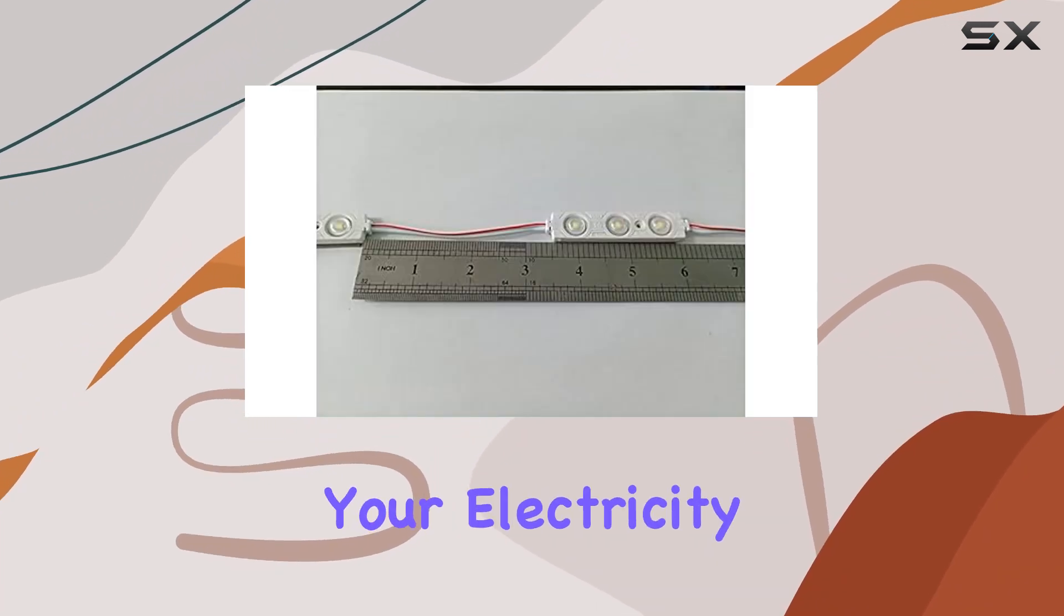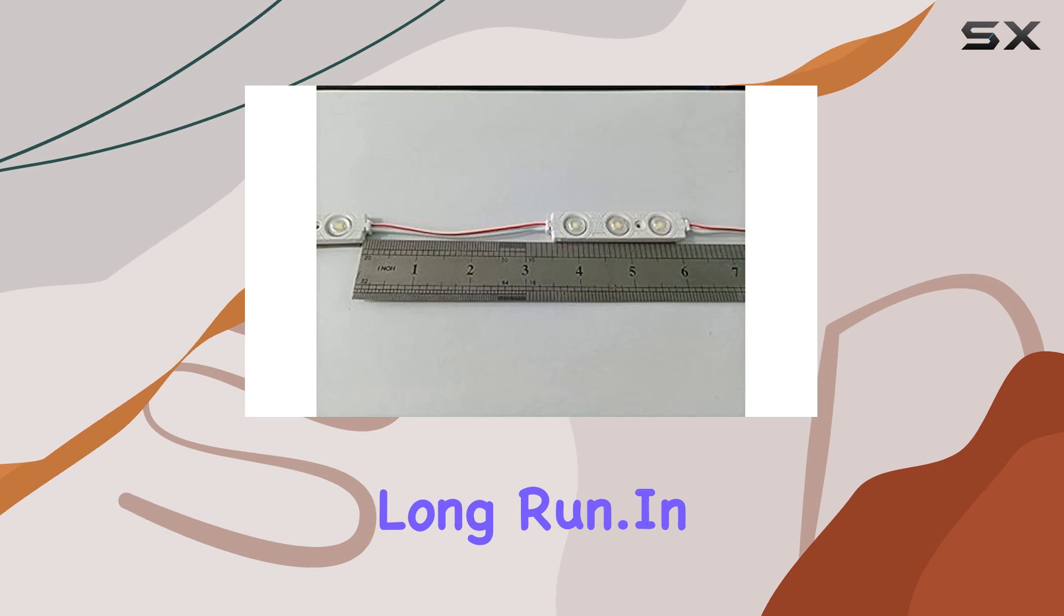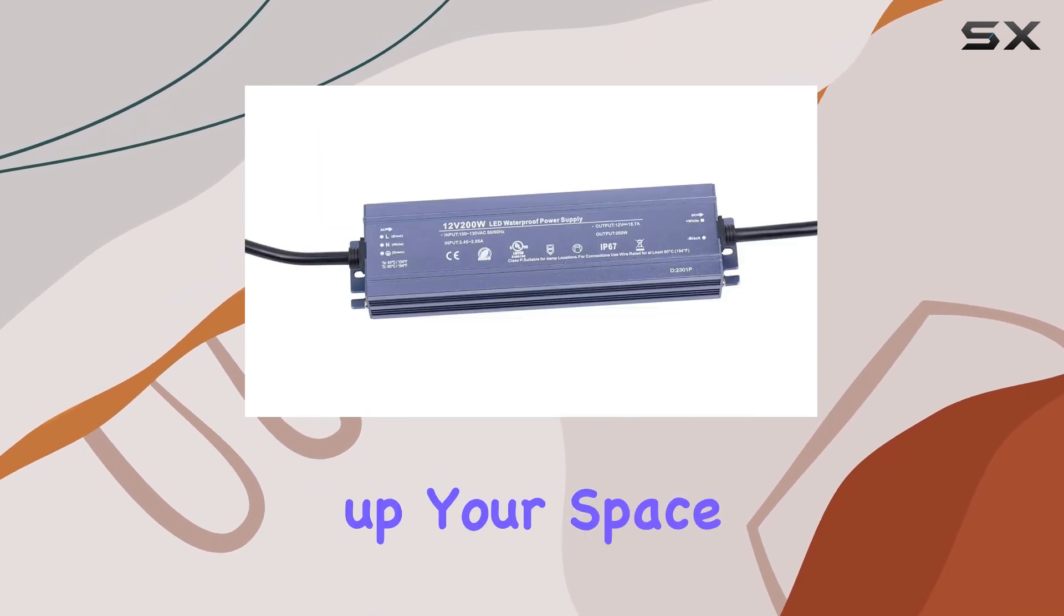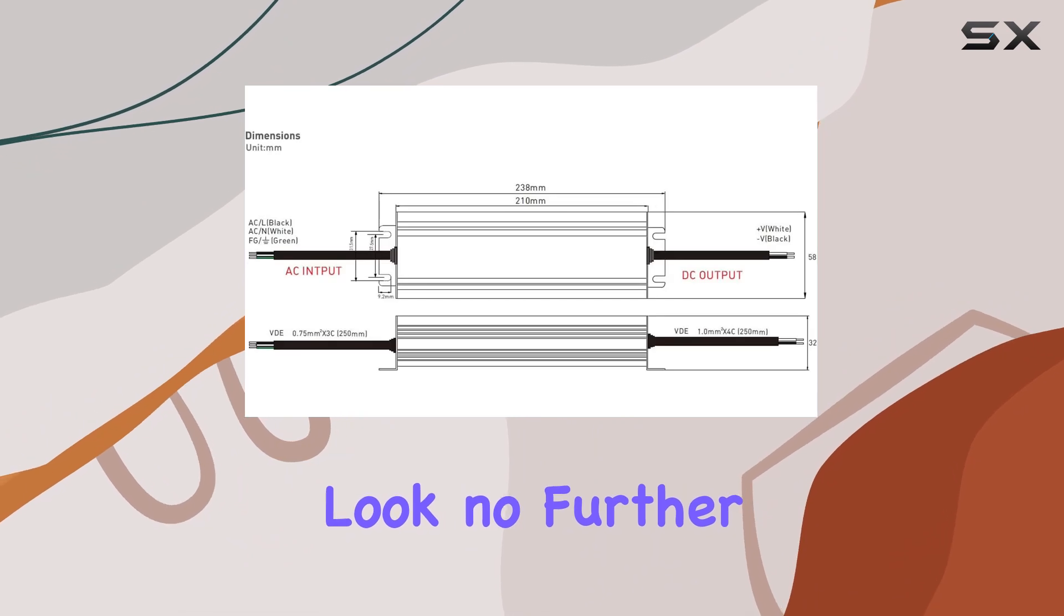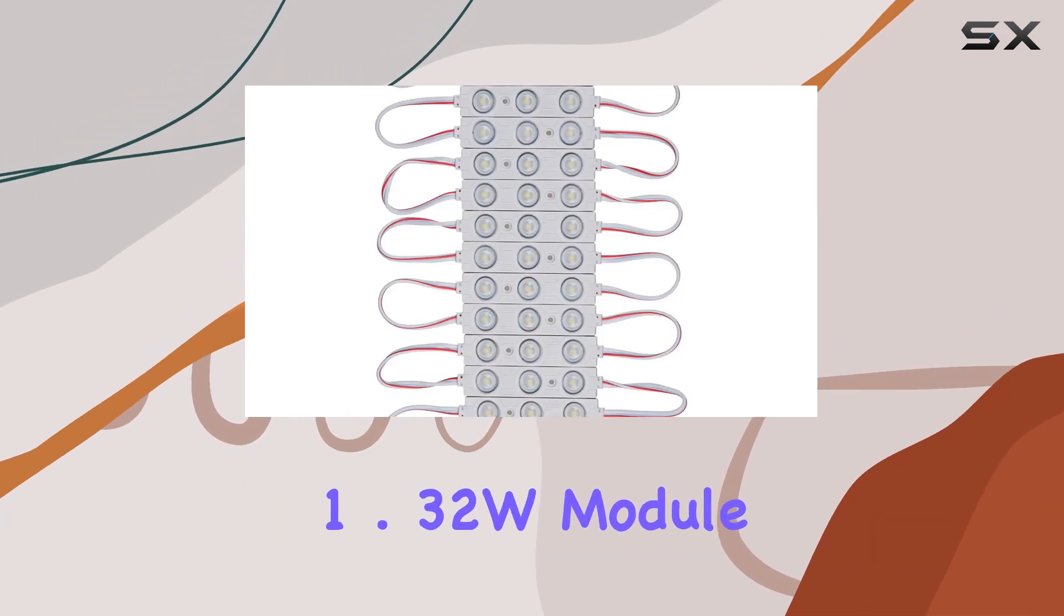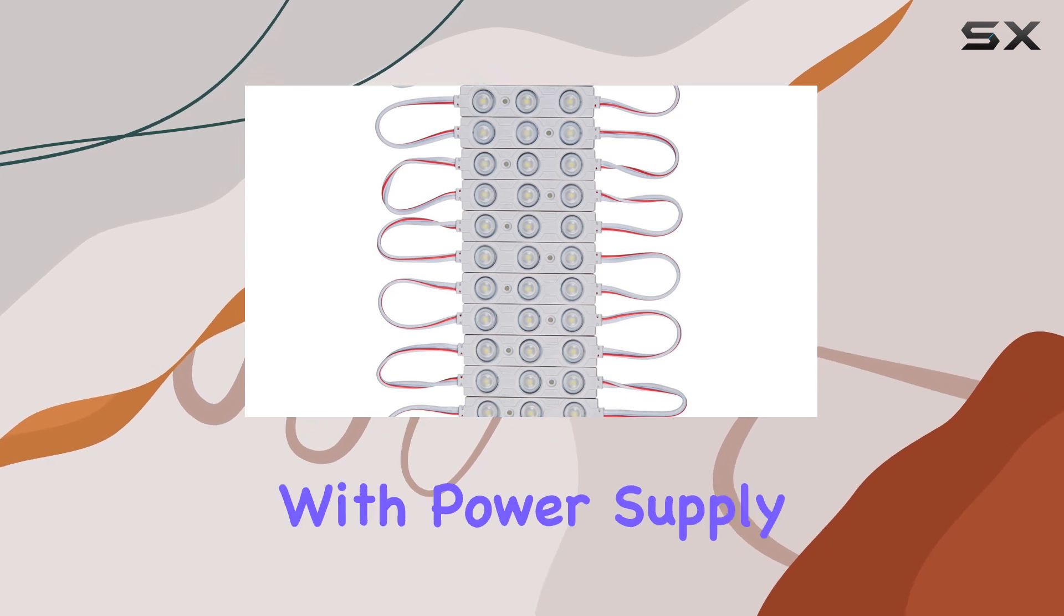Saving you money on your electricity bill in the long run. In conclusion, if you're looking for the best lighting solution to brighten up your space and grab attention, look no further than the LED Module DC12V Cool White 10,000K 1.32W module strip light with power supply.